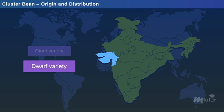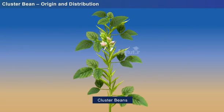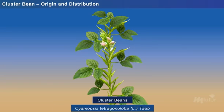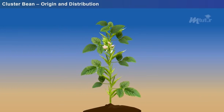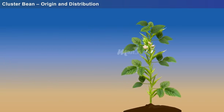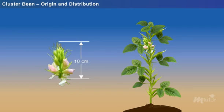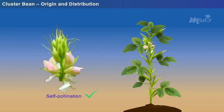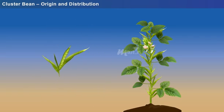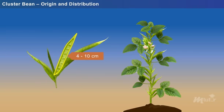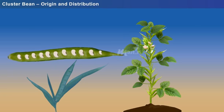The scientific name of cluster bean is Cyamopsis tetragonoloba L. Tob. Cluster bean is an annual erect plant growing to a height of 3 meters. The plant has an angled stem with trifoliate leaves. The flowers are pink or white in color, placed at the axillary raceme which is 10 centimeters long. Fertilization occurs through self-pollination. The developed pods are linear, erect, and compressed. The fruits are produced in clusters, with each pod measuring 4–10 centimeters in length and containing 5–12 white to grayish black colored seeds.